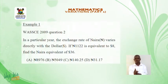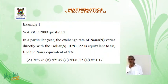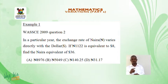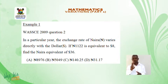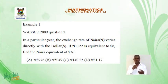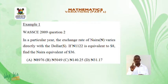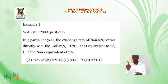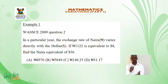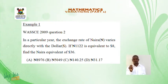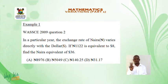Example 1. WASCE 2009, Question 2. In a particular year, the exchange rate of naira varies directly with the dollar. If 1,122 naira is equivalent to 8 dollars, find the equivalent of 36 dollars in naira. Options: a. 8,976 naira, b. 5,049 naira, c. 140 naira 25 kobo, d. 31 naira 17 kobo.